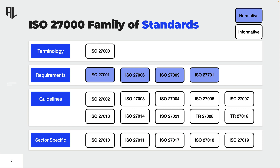Please note how there are normative and informative standards. Only normative standards can be audited for compliance. This allows organizations to get certified and demonstrate their abilities to outsiders. All standards specifying requirements are normative standards, and all the other standards are informative standards.